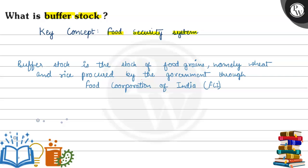Buffer stock is part of the food security system and is related to food security. Buffer stock is the stock of food grains, namely wheat and rice, procured by the government through the help of the Food Corporation of India, FCI.